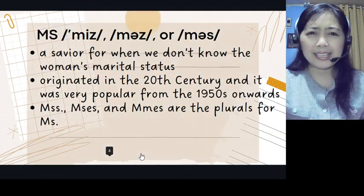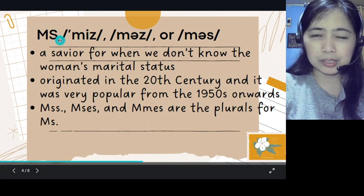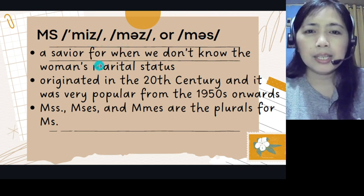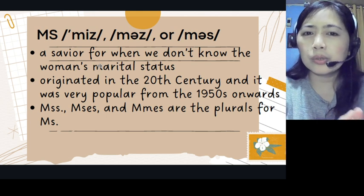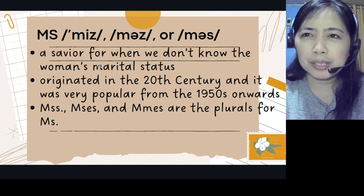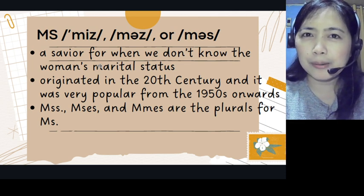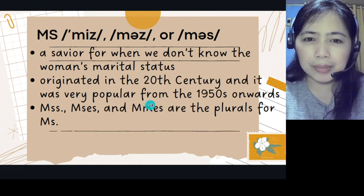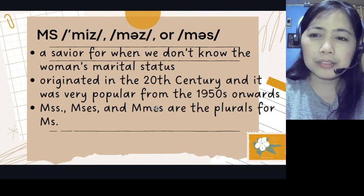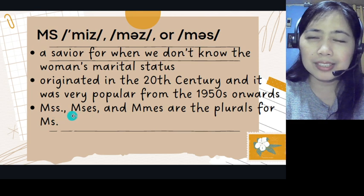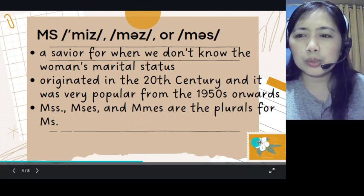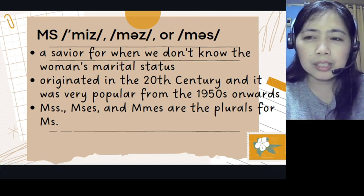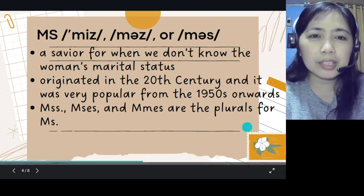The next word is Ms., spelled M-S with a period. The pronunciation is 'Miz,' or it could also be 'Miss' or 'Ms.' It is a savior for when we don't know the woman's marital status — for example, if she's divorced or we simply don't know. So the safest word to call that woman is just Ms. It originated in the 20th century and became very popular from the 1950s onwards. There is also a plural form for when you're addressing a group of women whose marital status is unknown.